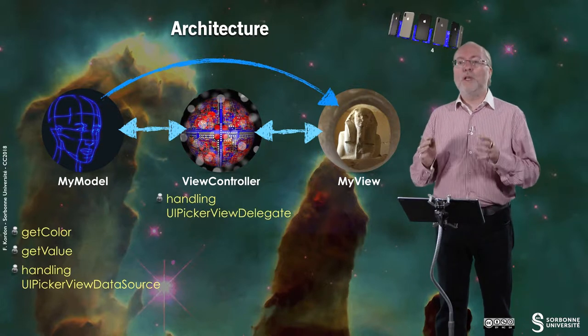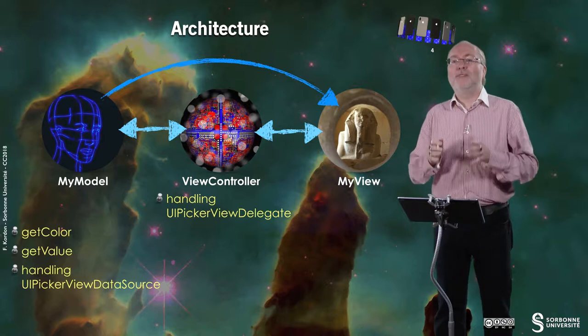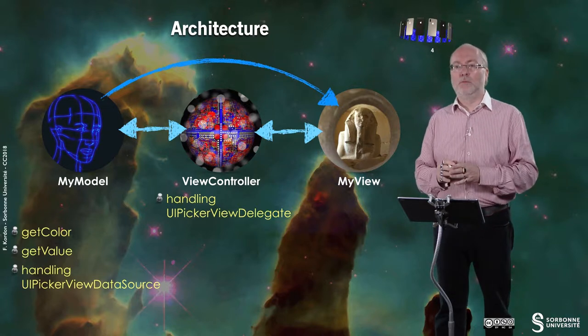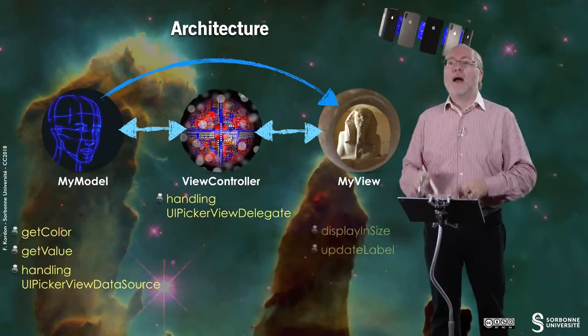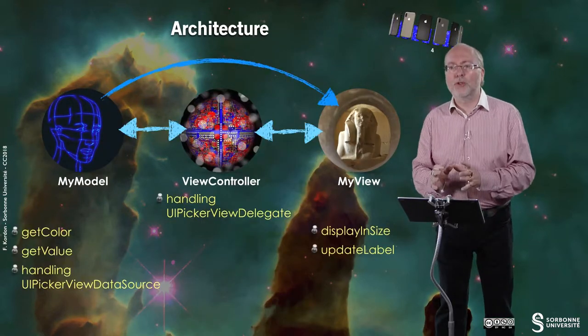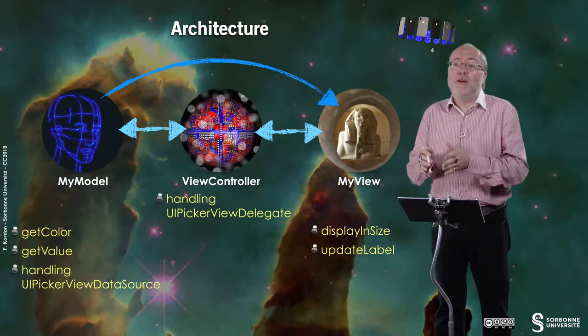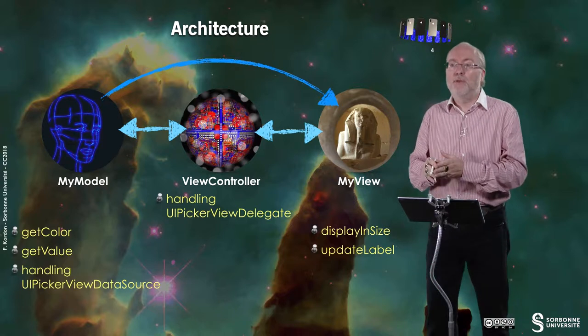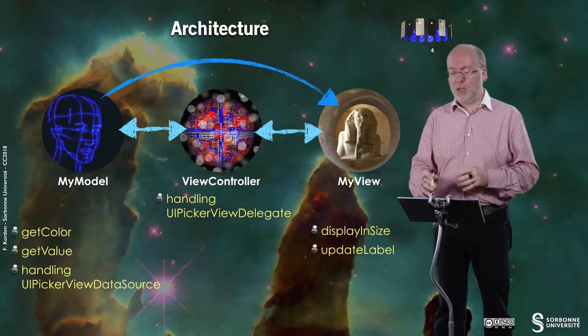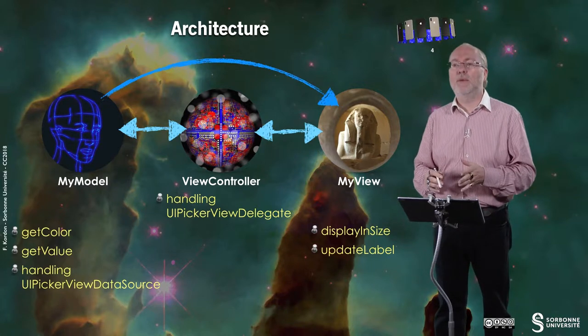The ViewController will handle the UIPickerViewDelegate protocol. So the one that is responding to actions. And MyView will handle no protocol even if the UIPicker in fact is located in MyView. But it will export two methods, displayInSize and updateLabel.